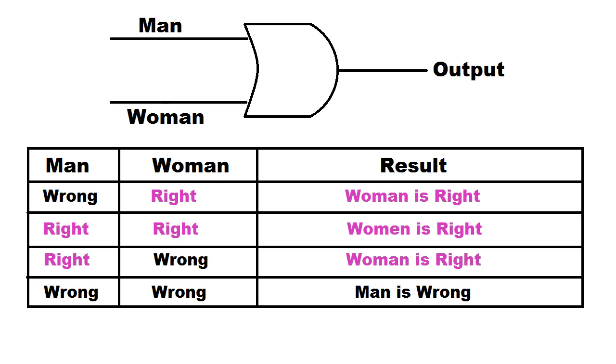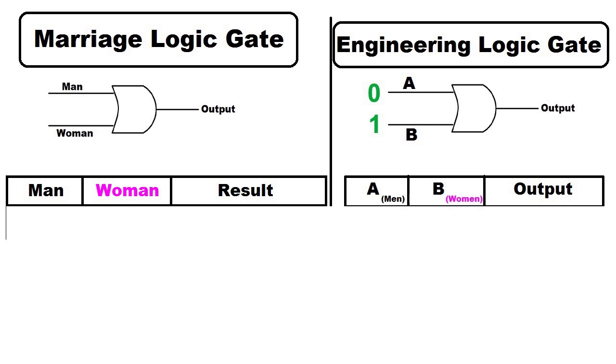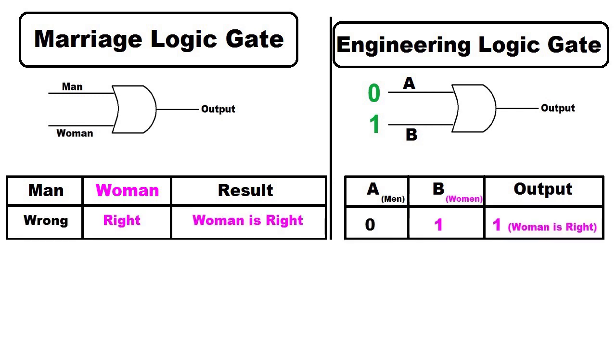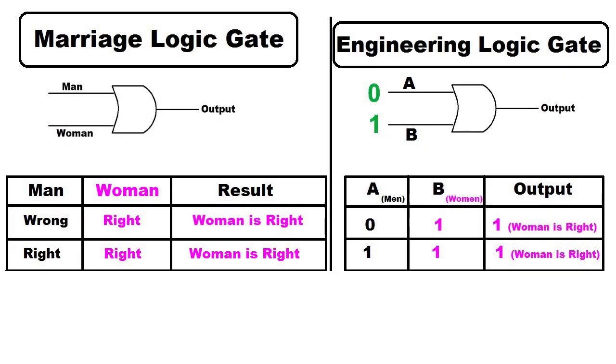According to this marriage logic gate convention, when a man is wrong and woman is right in the input, the output is absolutely right because woman was right in the input. Second case, when a man is right and woman is also right, the output is absolutely right because of woman.